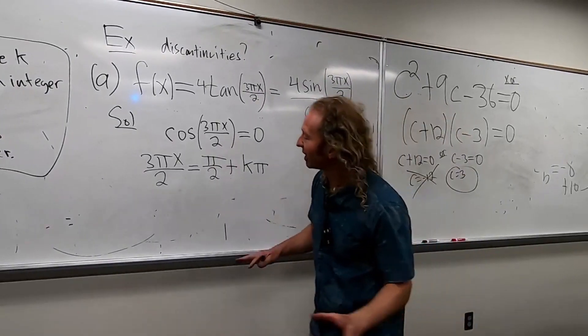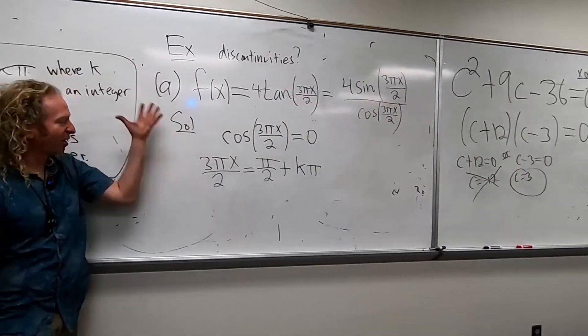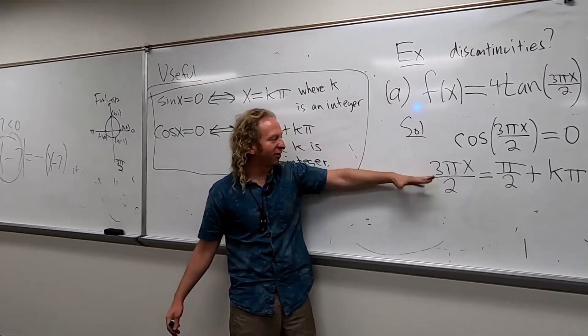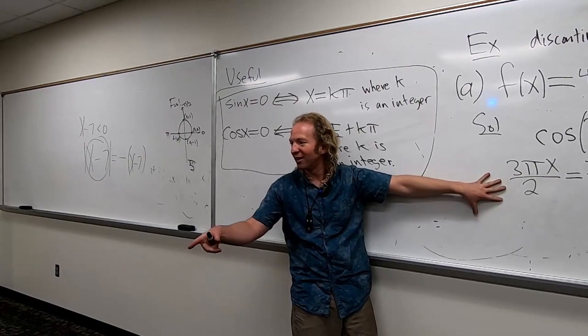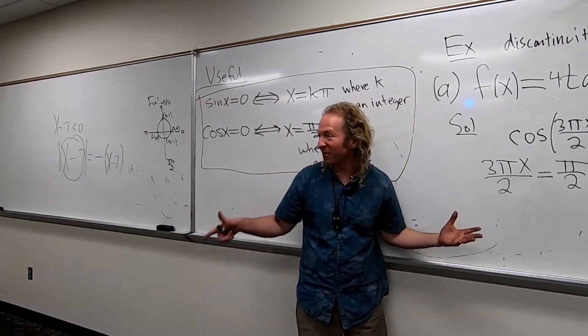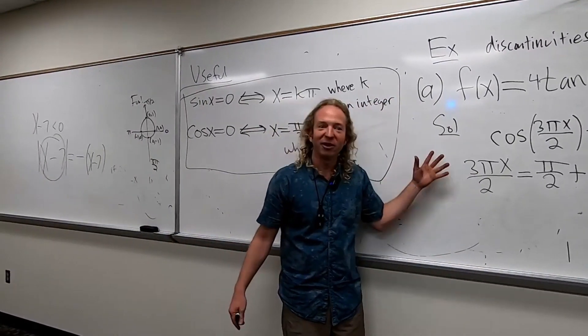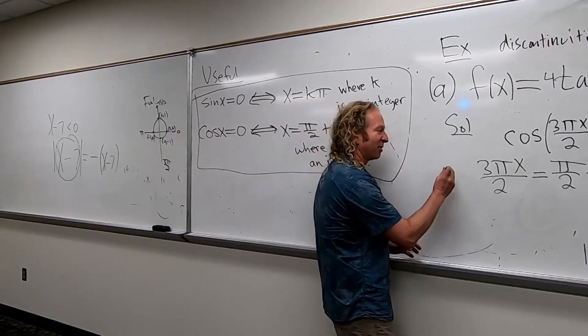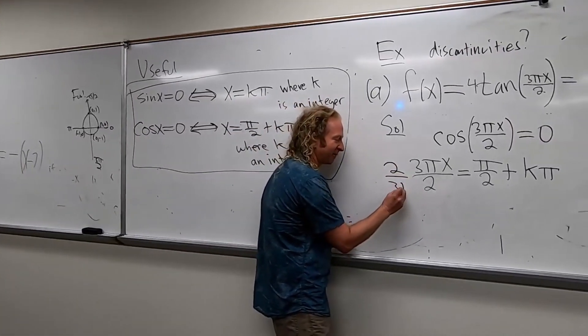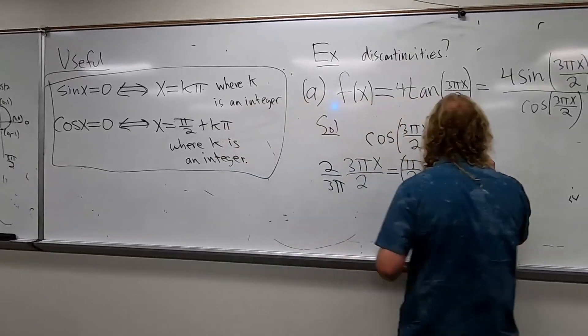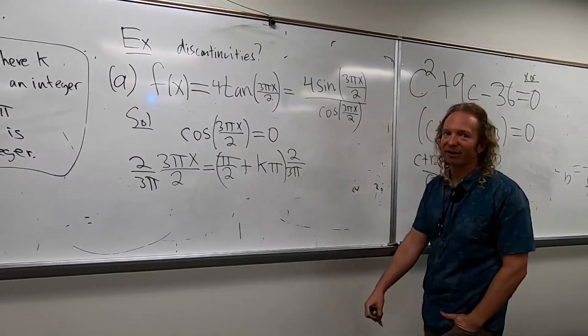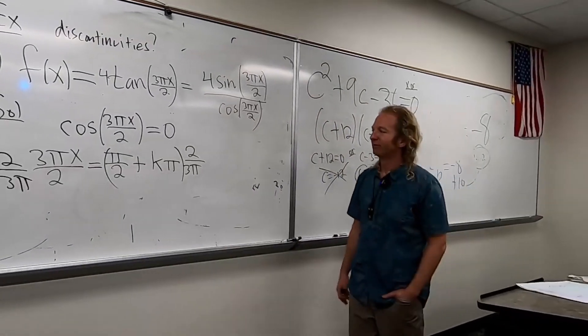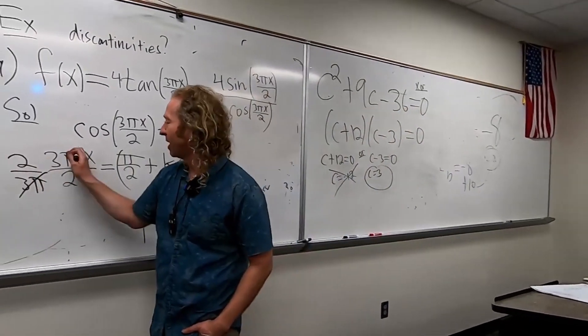All right. We have to solve for x. So to get rid of the 3 pi over 2, we can multiply by the... What is that called? The thing when you flip it. What is that called when you flip it? The what is it? The reciprocal. You know, I didn't know what that was for years. Yeah. It's called the reciprocal. So I'm going to show every step. I'm going to put a 2 over 3 pi here. And I'm going to put one here. I'm going to show... You can skip steps. I'm just going to show every step.